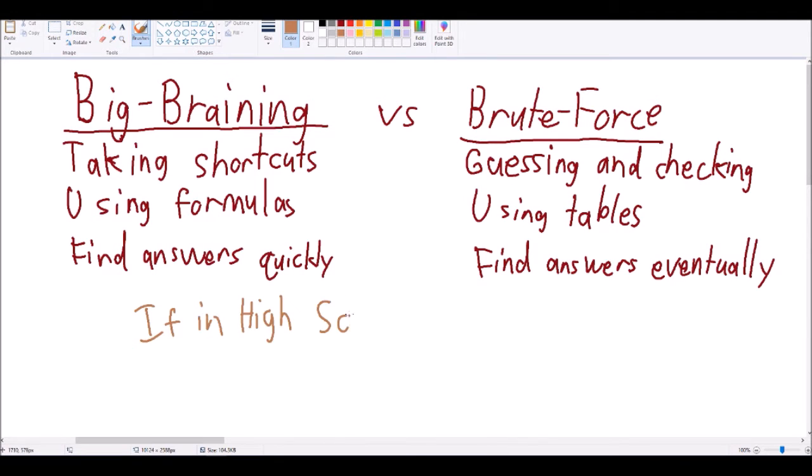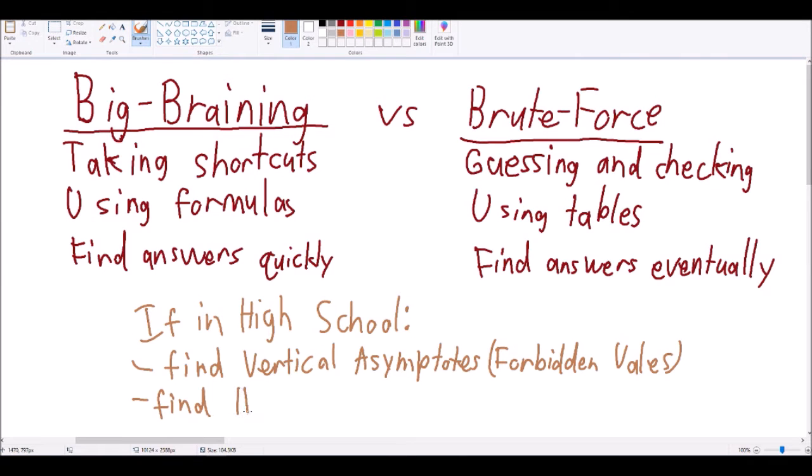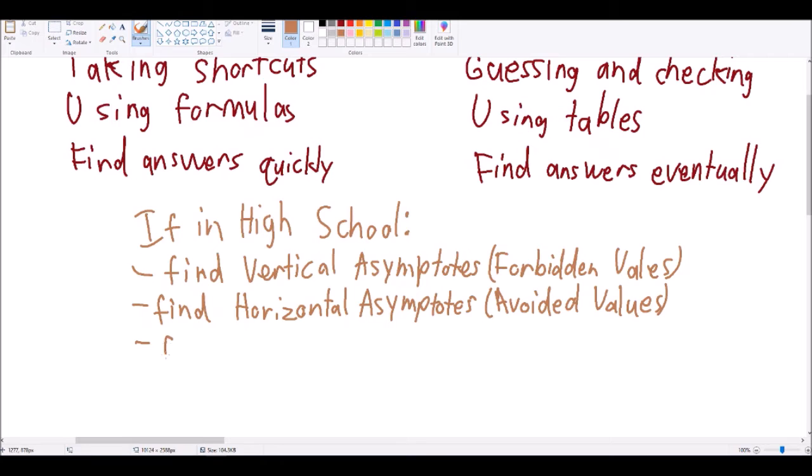If you're in high school algebra, you'll know the greatest shortcuts to finding avoided values, a.k.a. horizontal asymptotes. You can manage forbidden values, a.k.a. vertical asymptotes. You can define continuity, and do lots of other things.